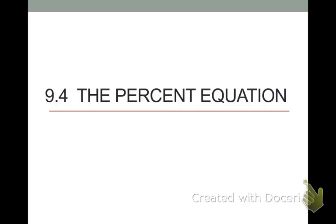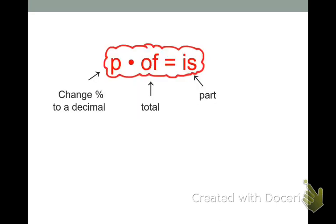Today's lesson is 9.4, the percent equation. This is the percent equation. Everyone say P times of equals is. P times of equals is. So yesterday, the day before, we talked a lot about percent. We talked about a proportion. Do you guys remember what it was that we said the two proportions were that we talked about yesterday? Is over of equals P over 100. This is another way of finding the same exact information that we were finding the past couple days.